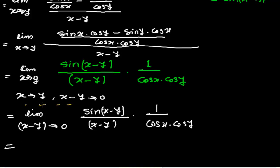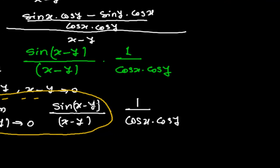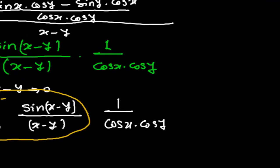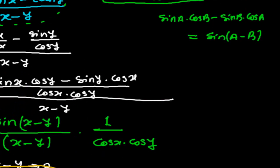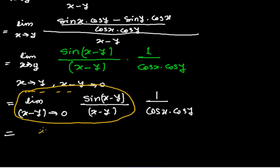This whole expression is now in the standard form. Since limit when θ tends to 0 of sin θ over θ equals 1, and here (x − y) is working as θ, we can directly write 1 for that part. So the expression becomes 1 times 1 upon cos x times cos y.